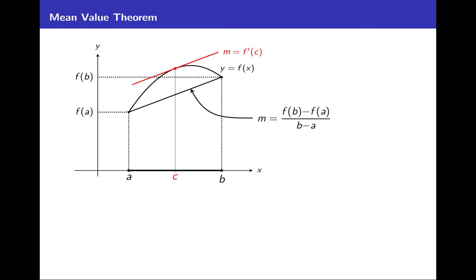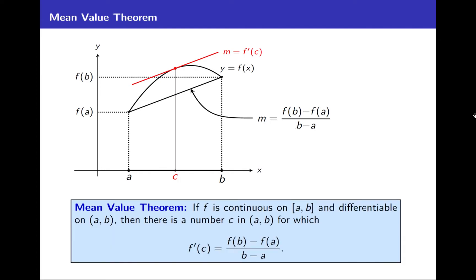The Mean Value Theorem says that what's shown in this picture always happens. For some c between a and b, f prime of c will equal this fraction. Here's the Mean Value Theorem stated carefully: if f is continuous on a closed interval from a to b and differentiable on the open interval from a to b, so its derivative always exists for any c between a and b, then there is a number c in the open interval from a to b for which f prime of c equals f of b minus f of a over b minus a. That this slope equals that one — that's the Mean Value Theorem.